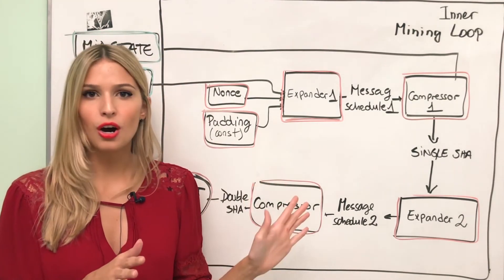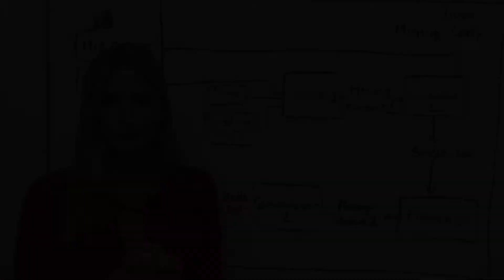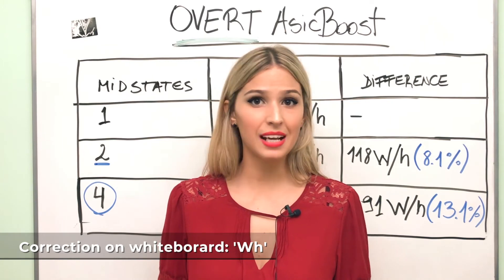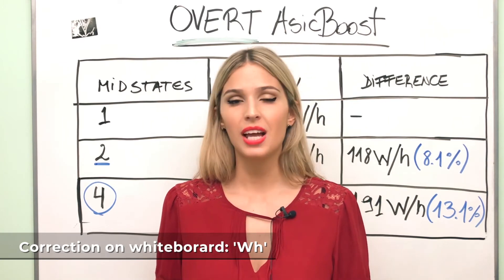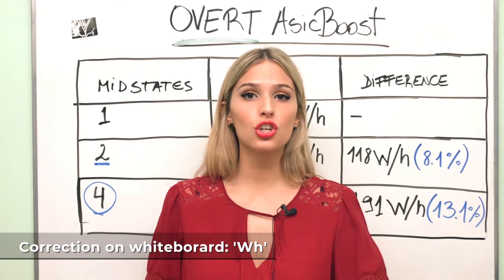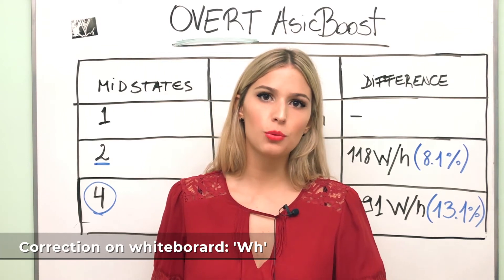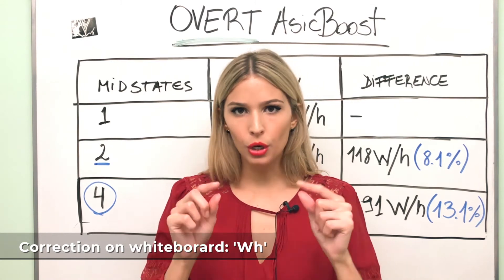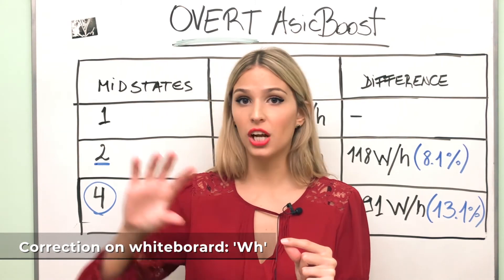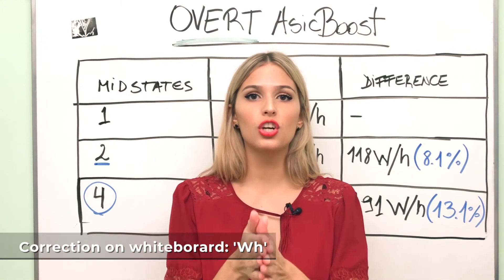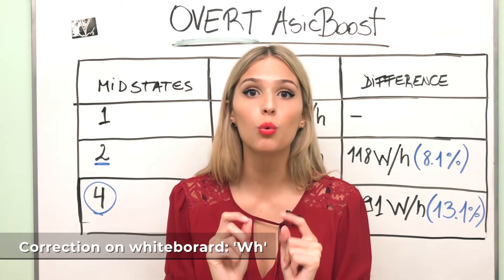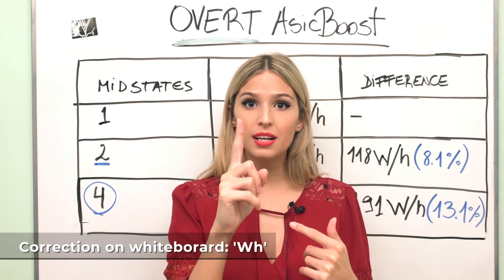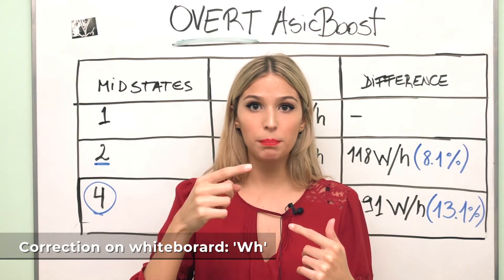What we already know about overt ASIC Boost is that it is easier to detect compared to covert ASIC Boost, that it is SegWit compatible, and that it does not have negative incentives to mine empty blocks or blocks with just a few transactions. We also know that chunk 2 is fixed and that we're focusing on the version field in chunk 1.